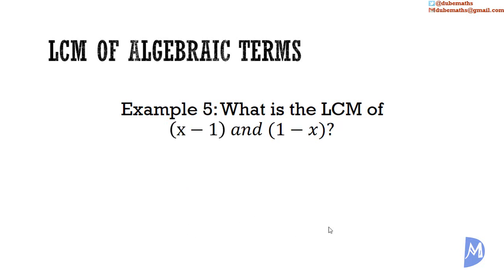A fifth and final example: what is the LCM of (x - 1) and (1 - x)? We need to note that (1 - x) is the same as -1 multiplied by (x - 1). How so?